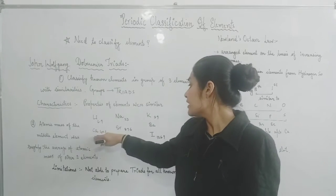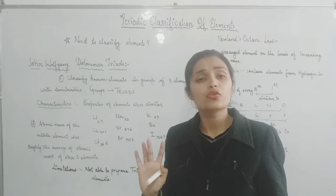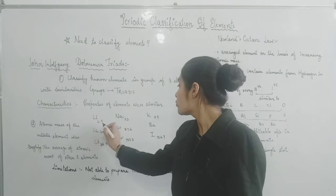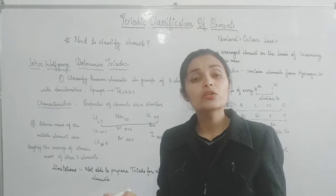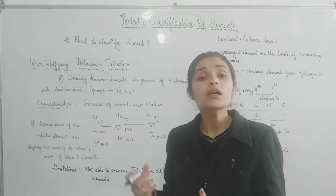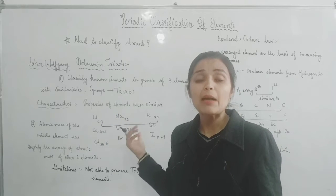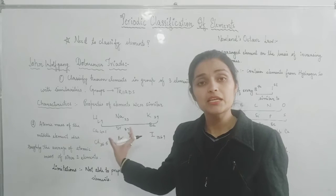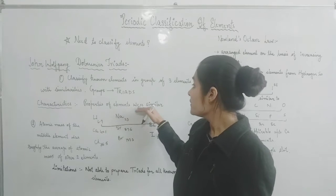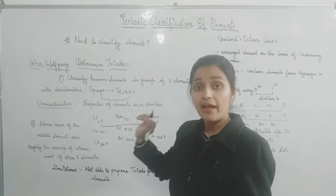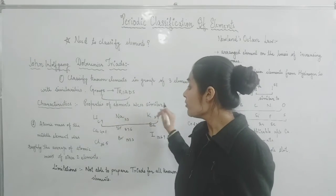Similarly, calcium, strontium, and barium are made into one group. So three elements are placed in one group, and these are called triads. Dobereiner said that within each triad, the physical and chemical properties of the three elements will be the same. These groups are called triads and their properties will be similar.